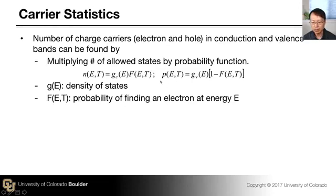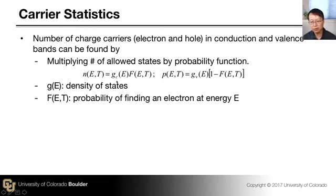Likewise, the concentration of holes in the valence band as a function of energy and temperature is given by the density of states of the valence band times the probability of not finding an electron at energy E. That is given by 1 minus the probability of finding an electron at energy E. So these equations specify electron concentration and hole concentration as a function of energy and temperature.